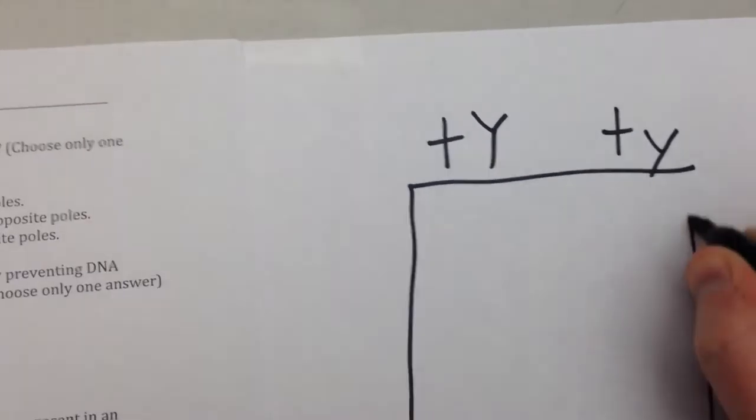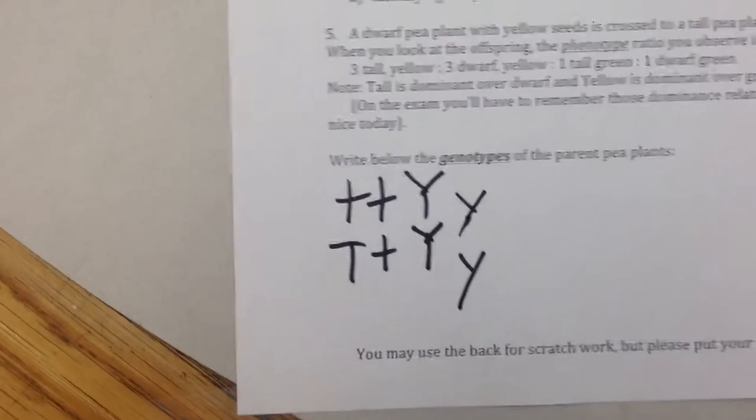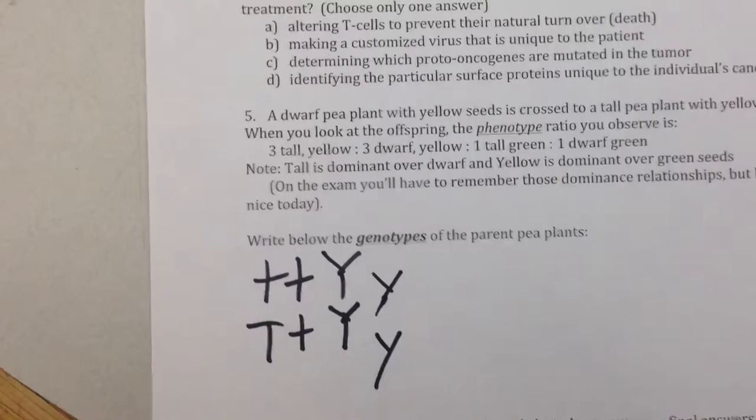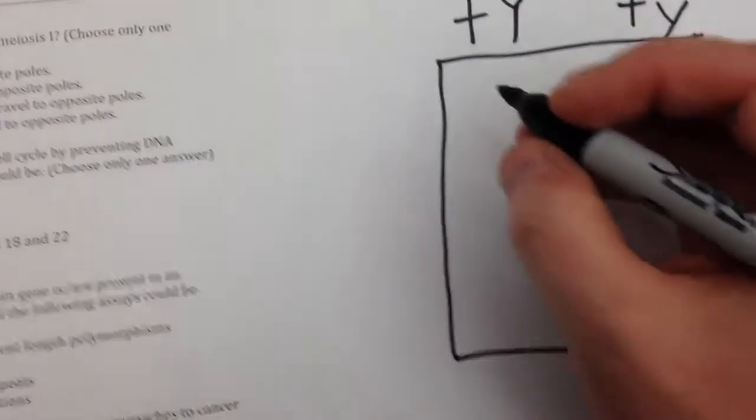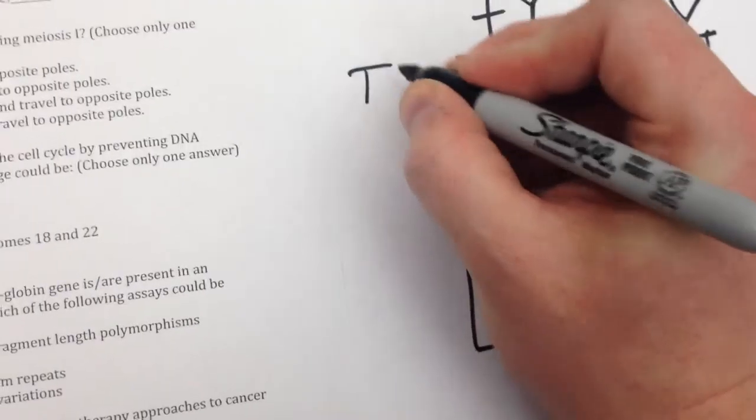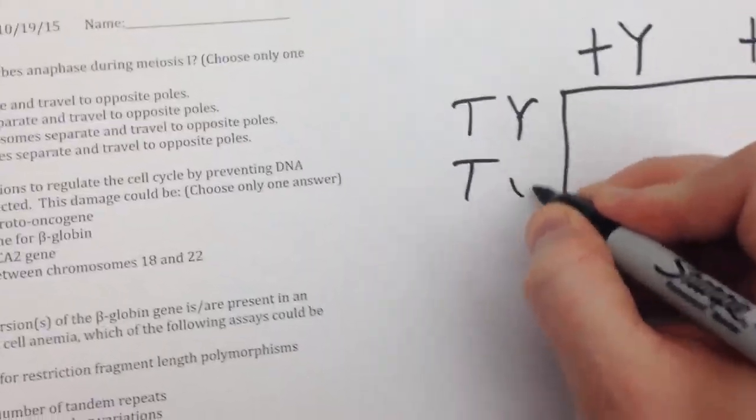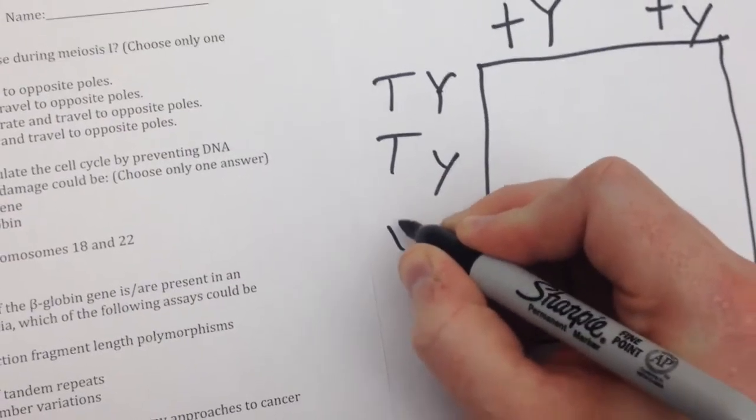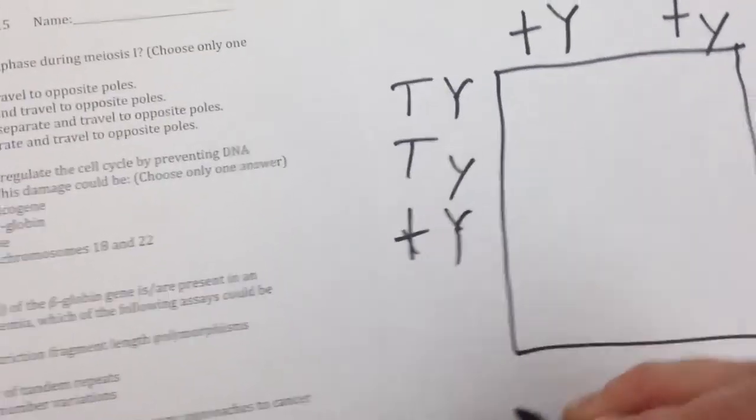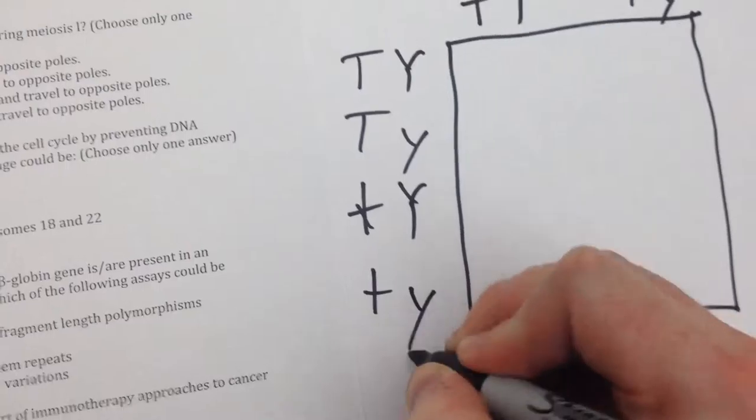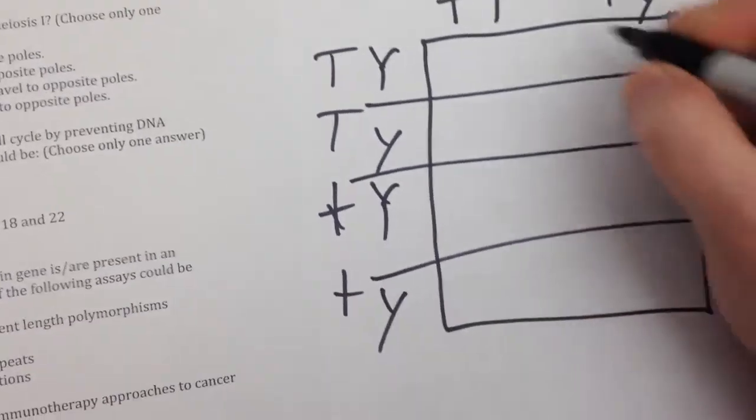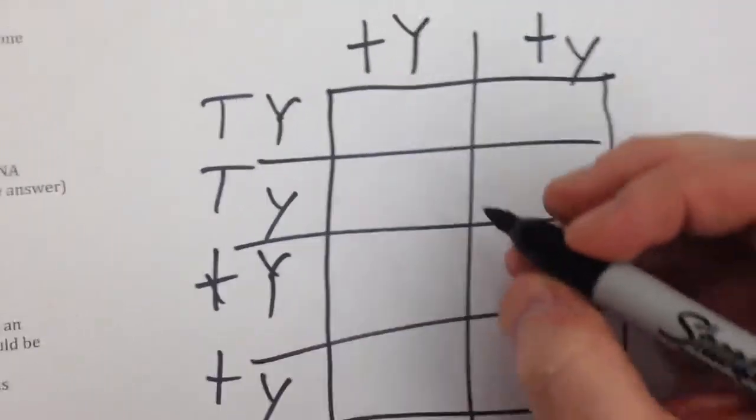The other pea plant is a hybrid at both genes, and so you have four possible genotypes in the gametes: big T big Y, big T little y, little t big Y, and little t little y. And when you fill out the rest of the Punnett square...